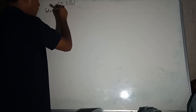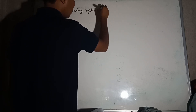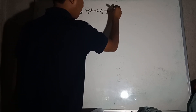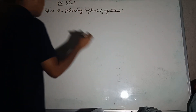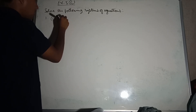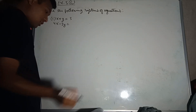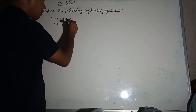Exercise 3C. Solve the following systems of equations. Number 1: x plus y equal to 3, and 4x minus 3y equal to 26.